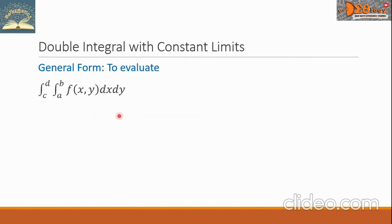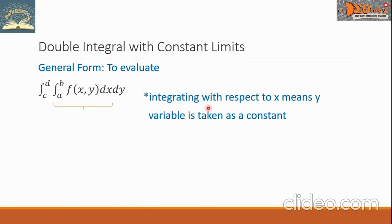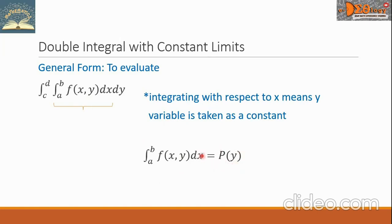To simplify this, the first step is to simplify the inner integral — that is, the definite integral from a to b of the function f(x,y) dx. It means we're going to integrate the function with respect to x. Integrating with respect to x means the y variable is taken as a constant. When we simplify this inner integral, the resulting function will be capital P with respect to y, which means a function of y. We then substitute this value for the inner integral, giving us the definite integral from c to d of P(y) dy.